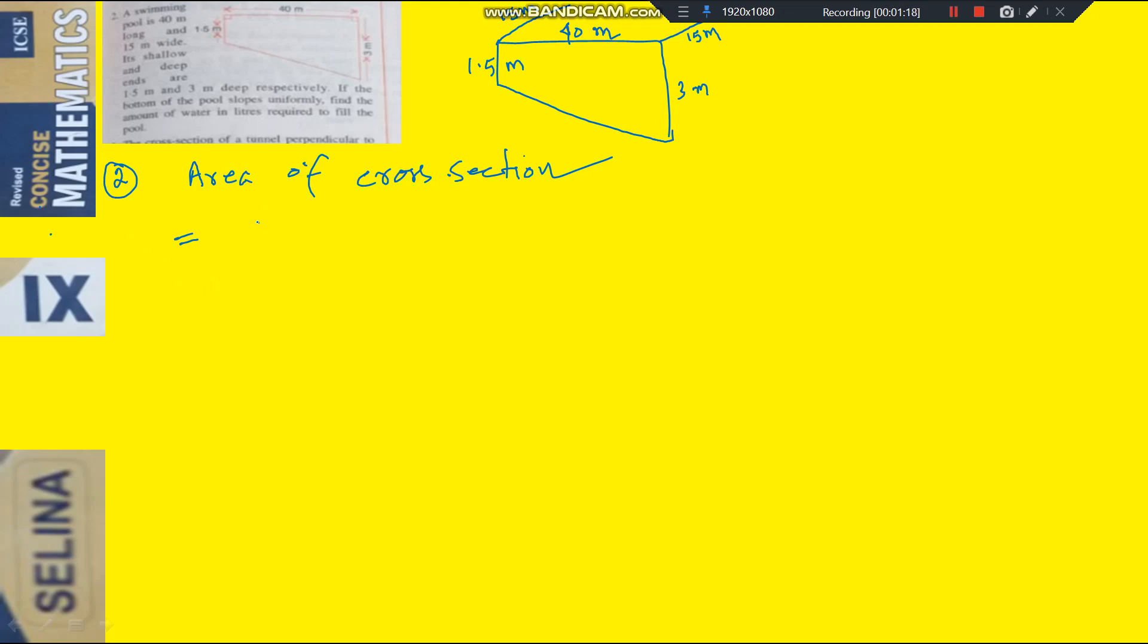Sum of parallel sides into distance between them. The sum of parallel sides, this one and this one parallel. So sum of parallel sides, that is 1.5 plus 3, into distance between them is 40.